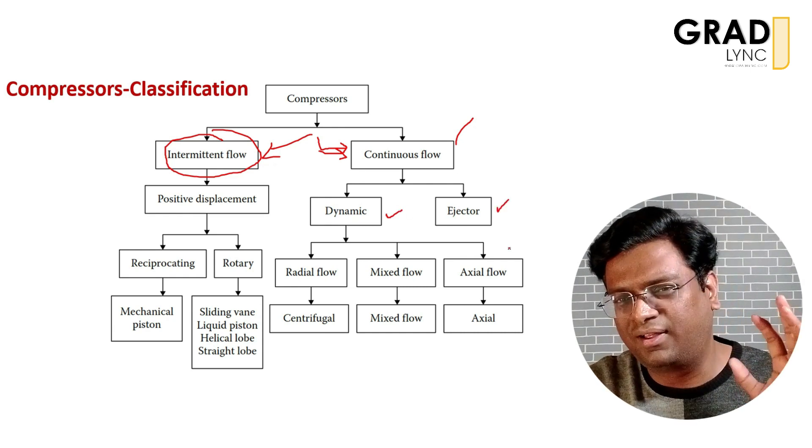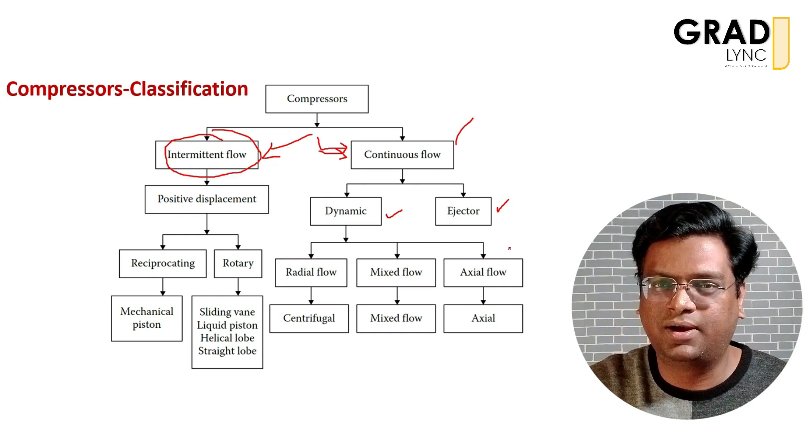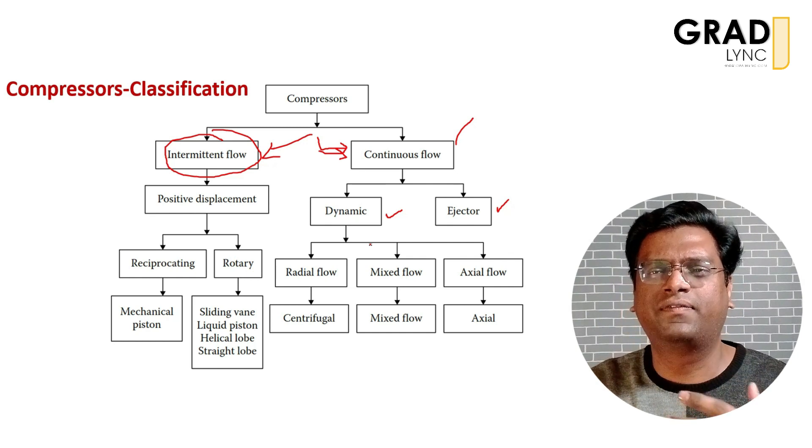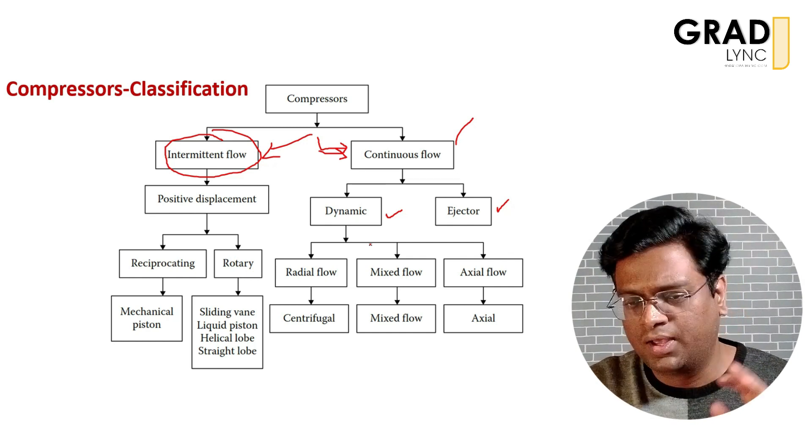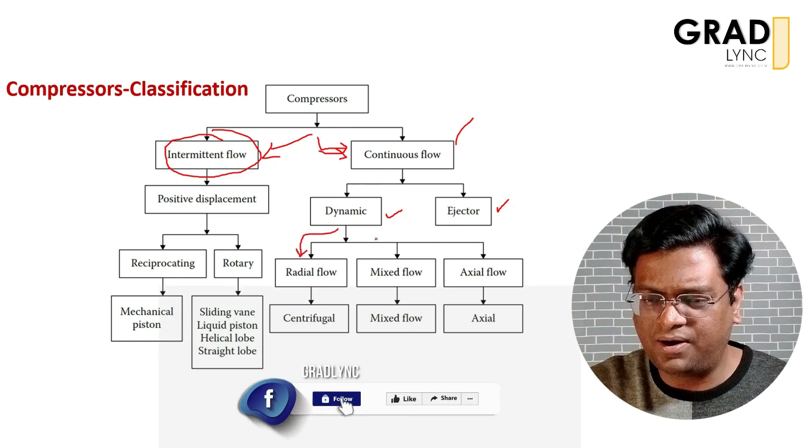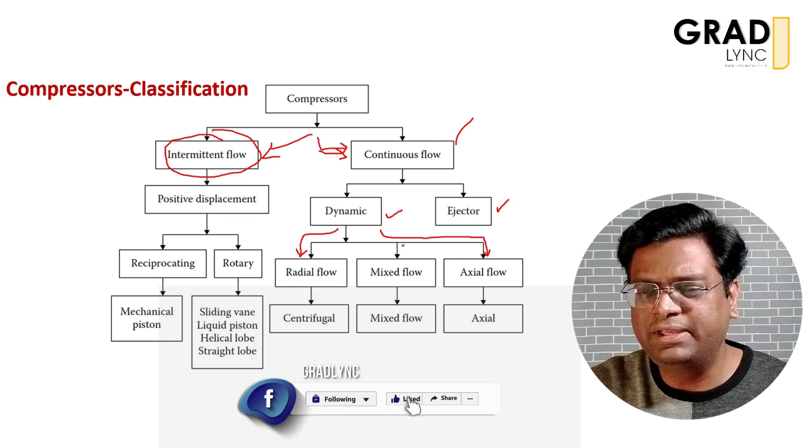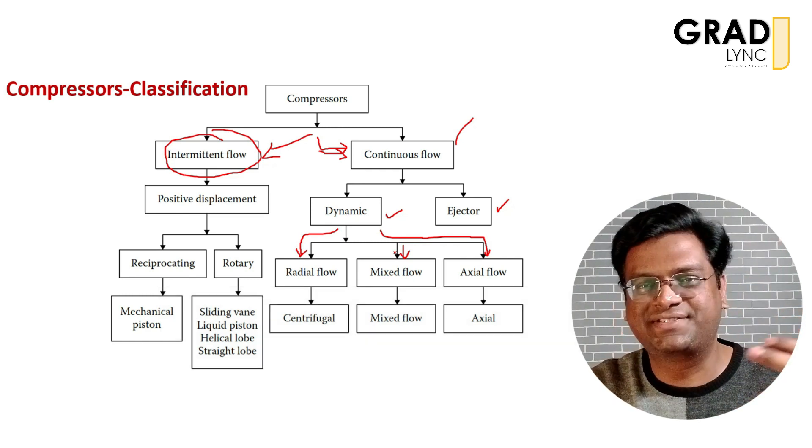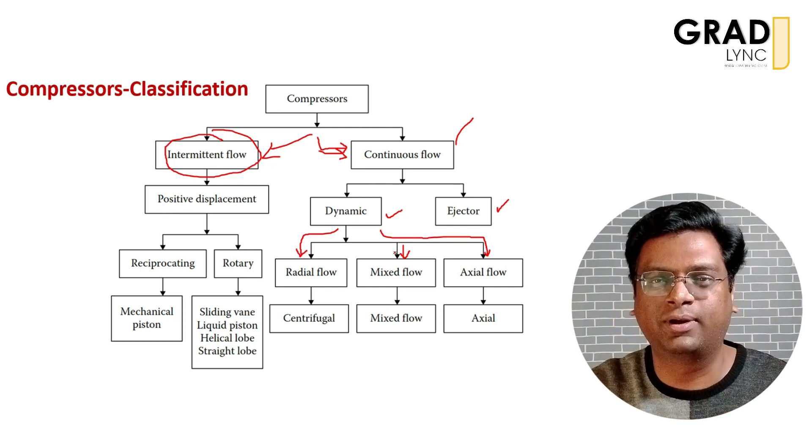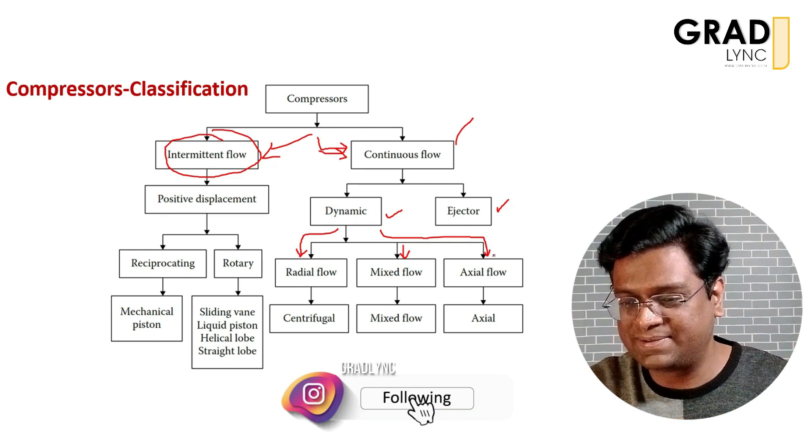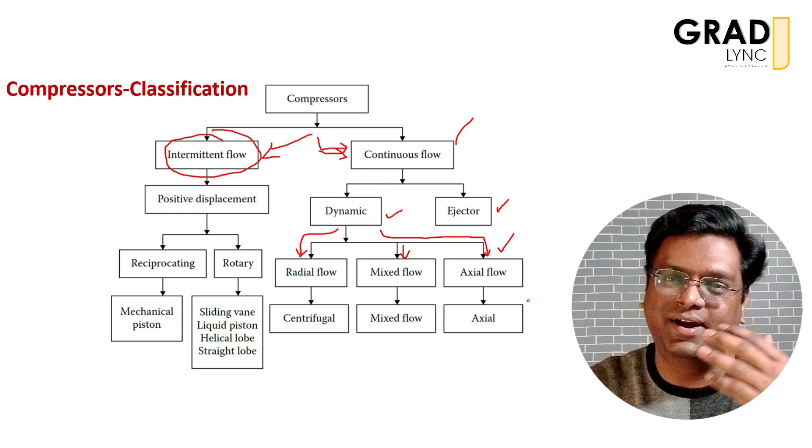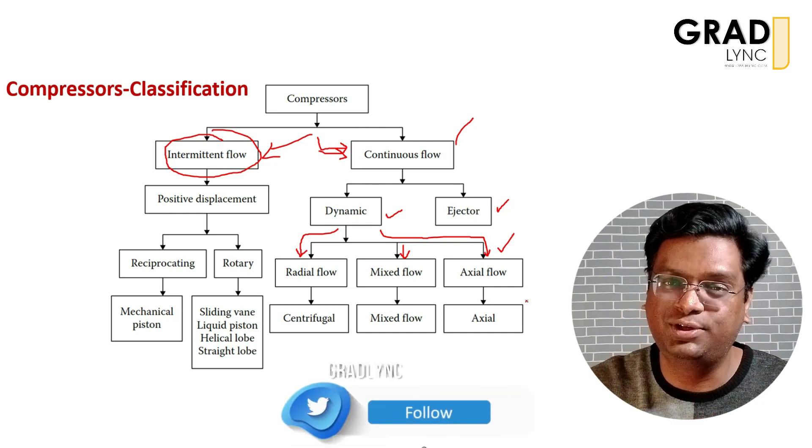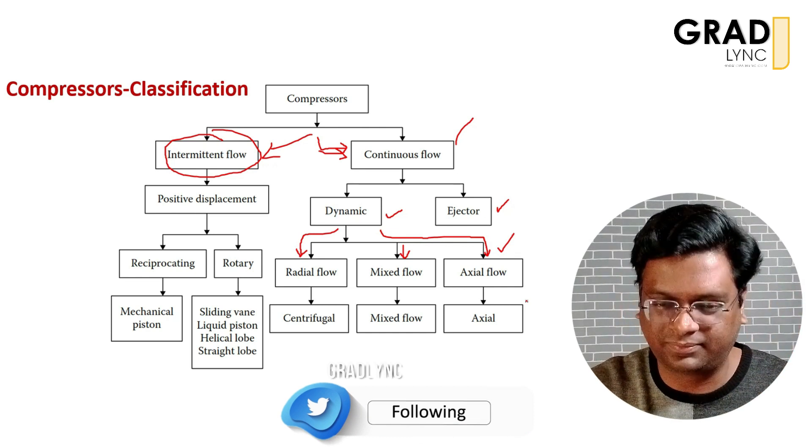Ejector type has limited application and we are not using it in aircraft engines. When it comes to the dynamic compressor, there are many ways the air can flow across the compressor. It can be radial, axial flow, or a mixture of both. Radial is when the flow enters axially but leaves the compressor radially, perpendicular to the direction of flow. Whereas in axial case, the air enters and leaves axially. These are the two major types we use for aircraft applications and ground operations.